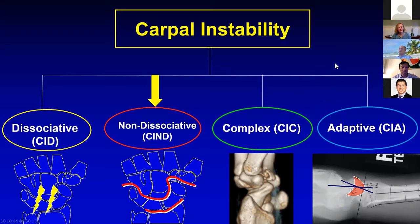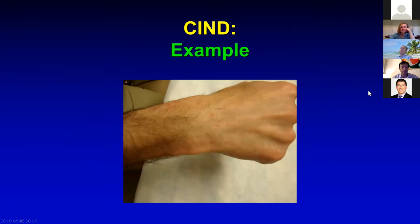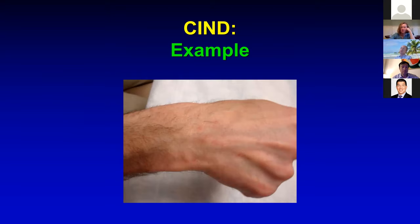The working definition from the IWIW: this is abnormal force transmission, or kinetics, across the proximal carpal row, manifested by abnormal static or dynamic motion, or kinematics, of the entire proximal carpal row — that's what's important here. The entire proximal carpal row moves abnormally as a unit. Here's an example of CIND: this is what we all think of as mid-carpal instability — the catch-up clunk — where the entire proximal row is popping up and down as the patient goes from radial to ulnar deviation.